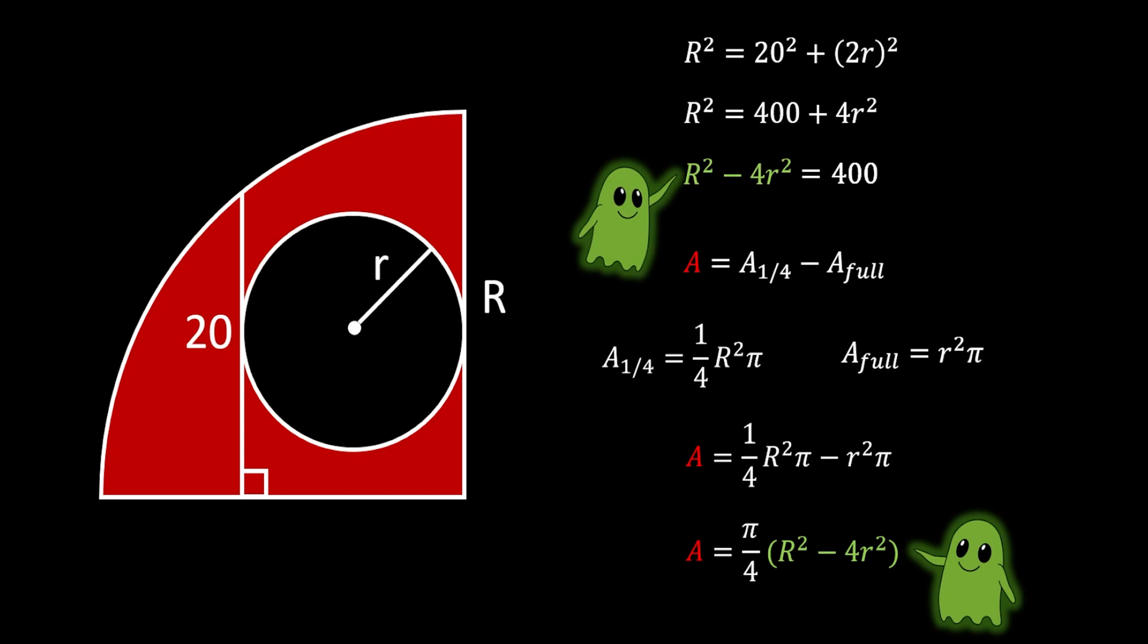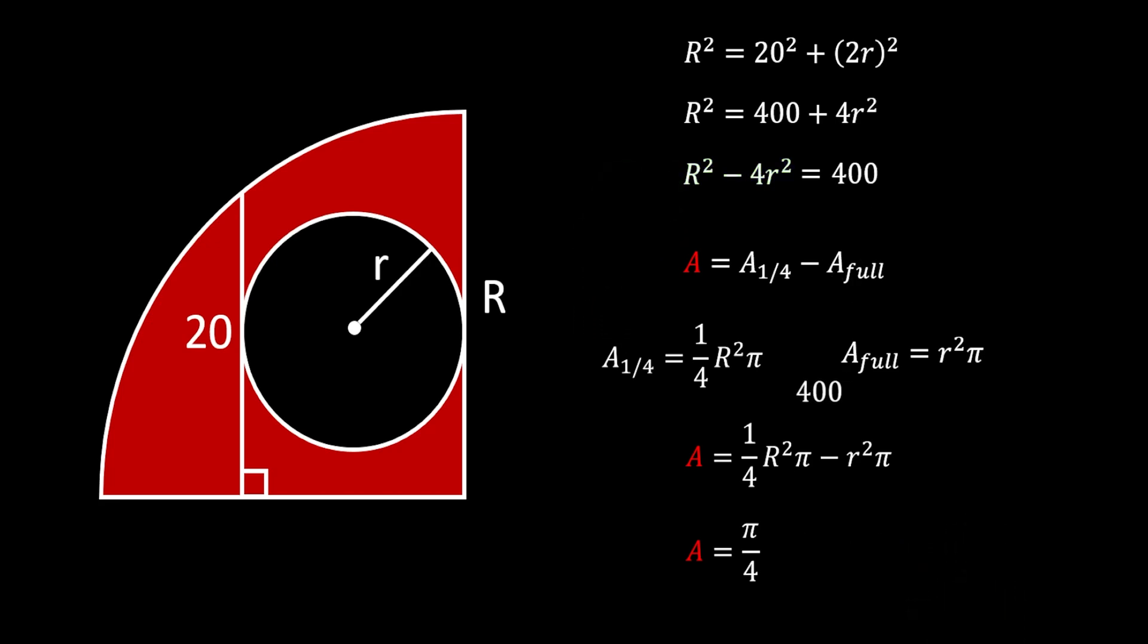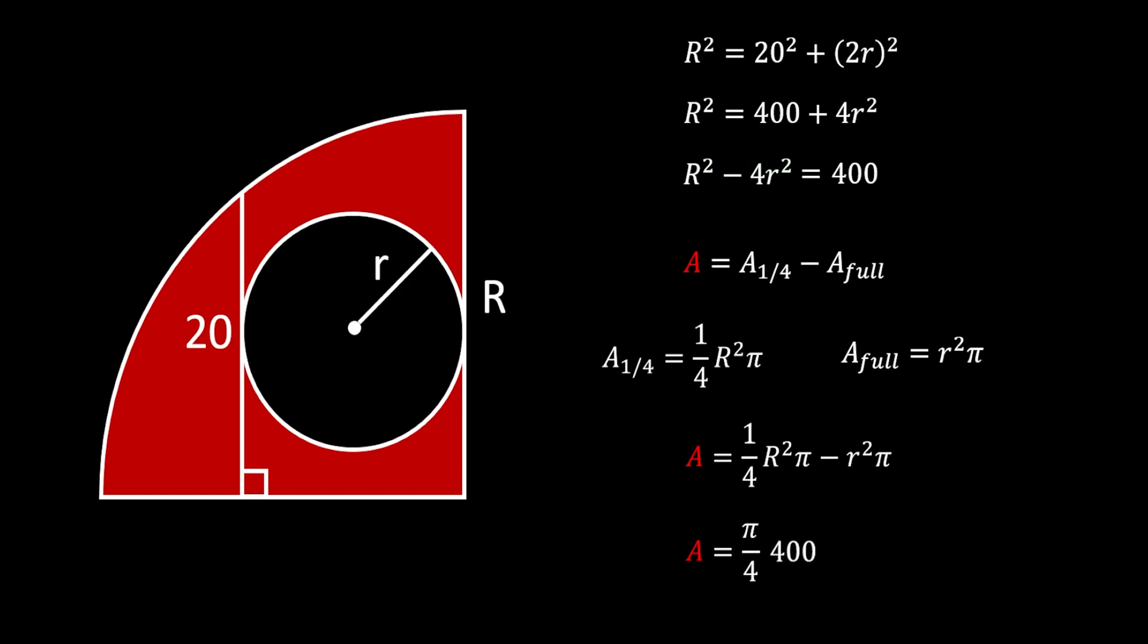So we can substitute that value instead and that means that our area is equal to 100 pi, and if we substitute pi with 3.14 we will get that our area is approximately 314 square units.